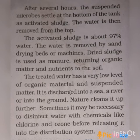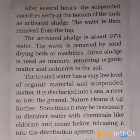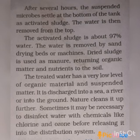The activated sludge is about 97% water. The water is removed by sand drying beds or machines. The dried sludge is used as manure, returning organic matter and nutrients to the soil. The treated water has a very low level of organic material and suspended matter, because in the previous steps these have been removed to the maximum extent.